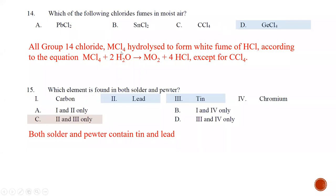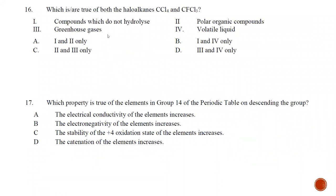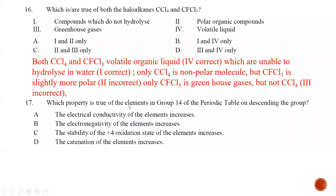Question number sixteen: which statements are true about both CCl4 and CFCl3? Statement one — both cannot hydrolyze — is correct, because neither has available d orbitals. Statement two — both are polar organic compounds — is wrong; CCl4 is non-polar. Statement three — both are greenhouse gases — is wrong; only CFCl3, the CFC compound, is a greenhouse gas; CCl4 is not. Statement four — both are volatile liquids — is correct because they are simple covalent molecules held by van der Waals forces. Statements one and four are correct, so the best answer is B.